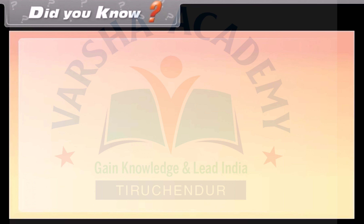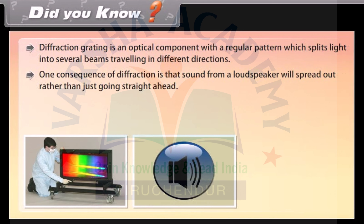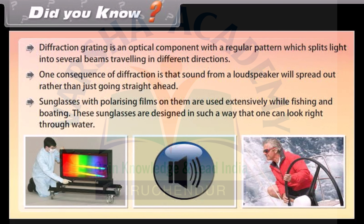Did you know? A diffraction grating is an optical component with a regular pattern which splits light into several beams traveling in different directions. One consequence of diffraction is that sound from a loudspeaker will spread out rather than just going straight ahead. Sunglasses with polarizing films are used extensively while fishing and boating, designed so that one can look right through water. Reflection of waves off sea walls or other barriers can cause an interference pattern called a standing wave — in standing waves, crests do not move laterally.